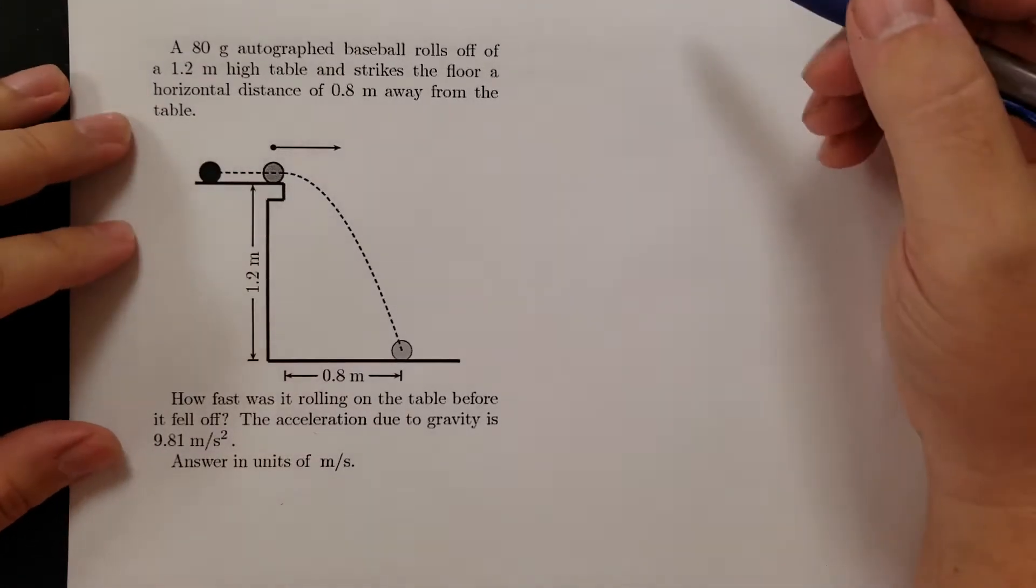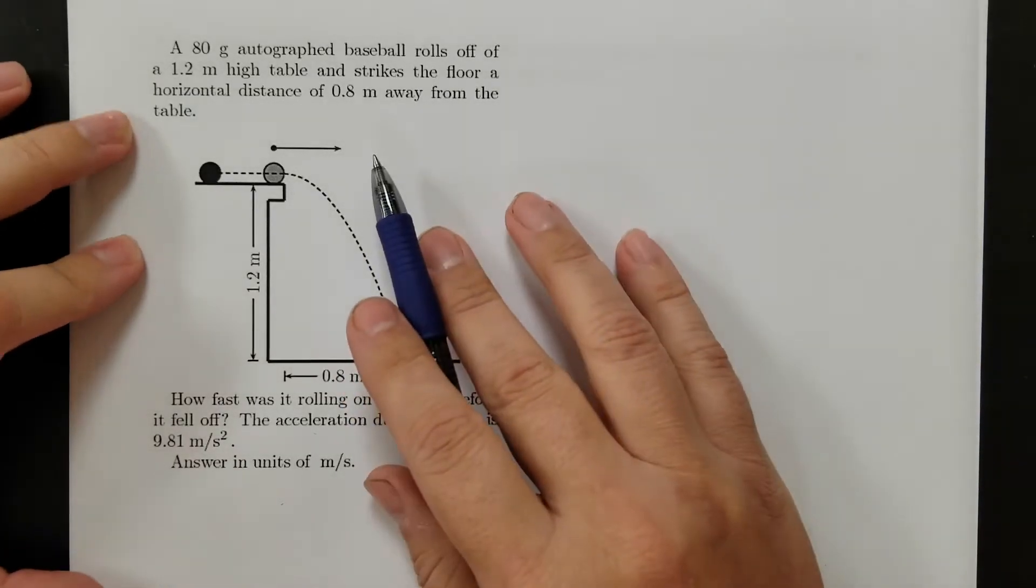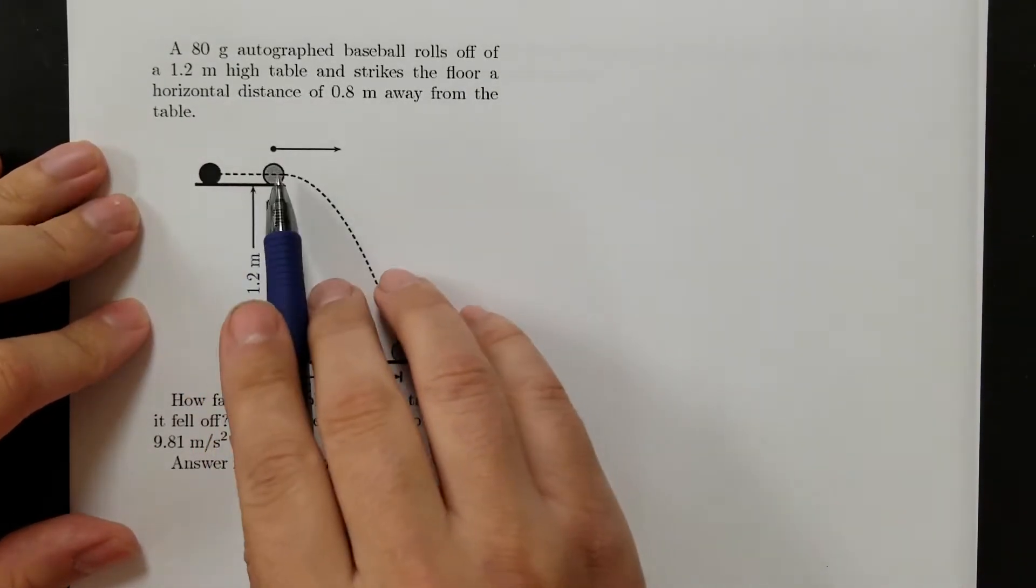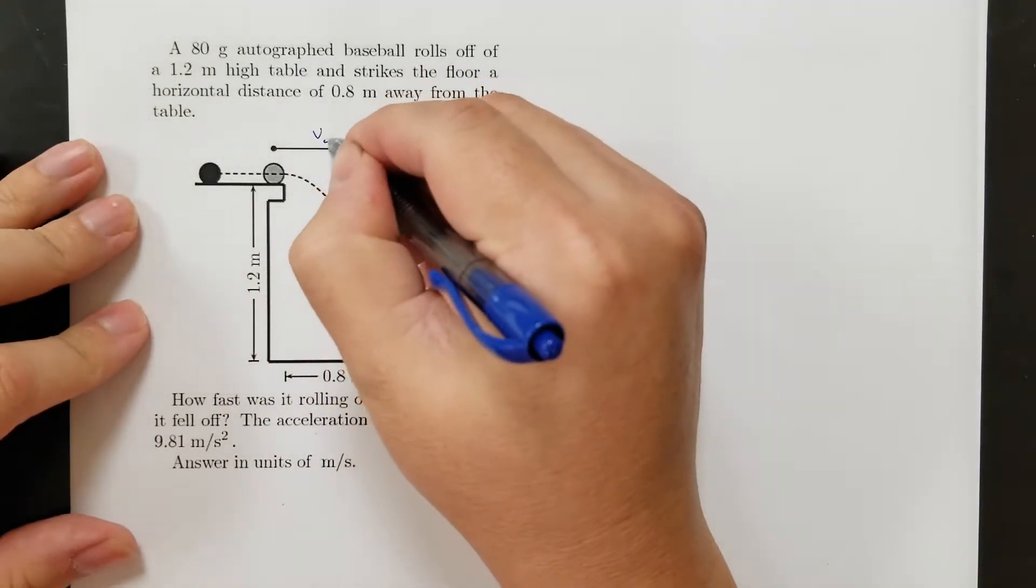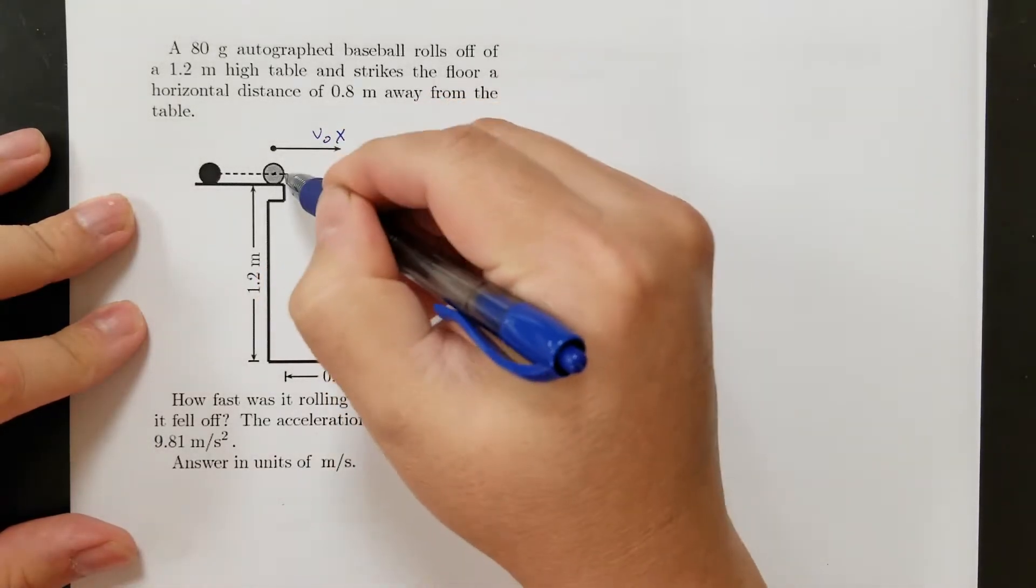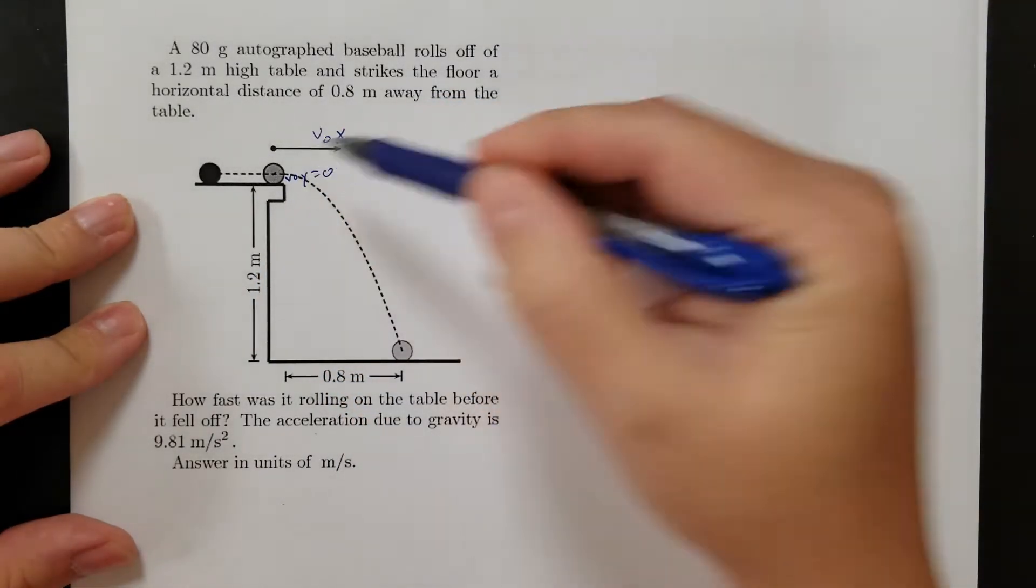So these example problems we're going to solve are involving horizontally launched projectiles. And so these problems, they're the easier version of projectile problems. So they're horizontally launched because they take off with some velocity in the x dimension. But here, their initial velocity in the y dimension is zero.